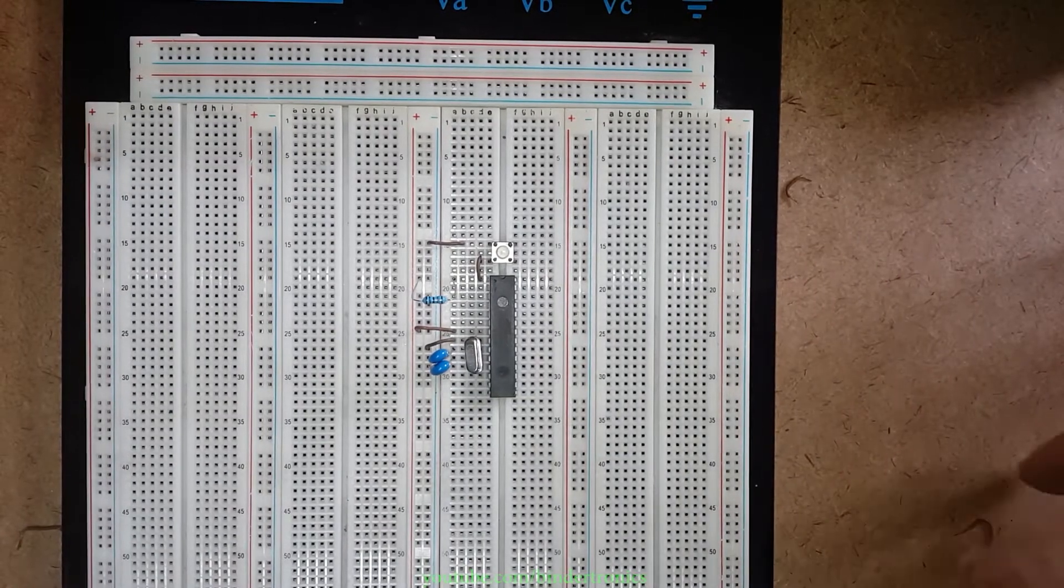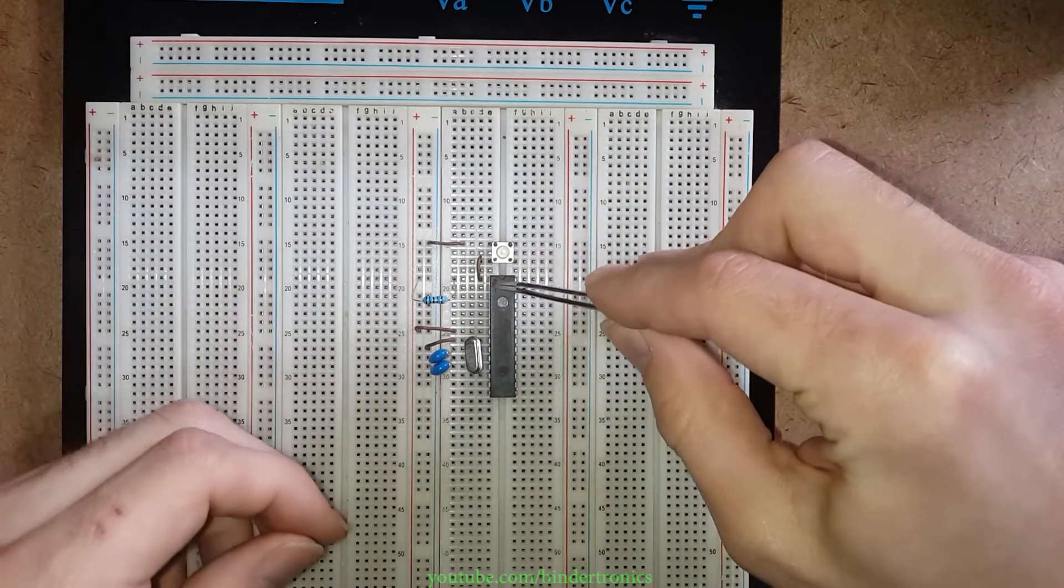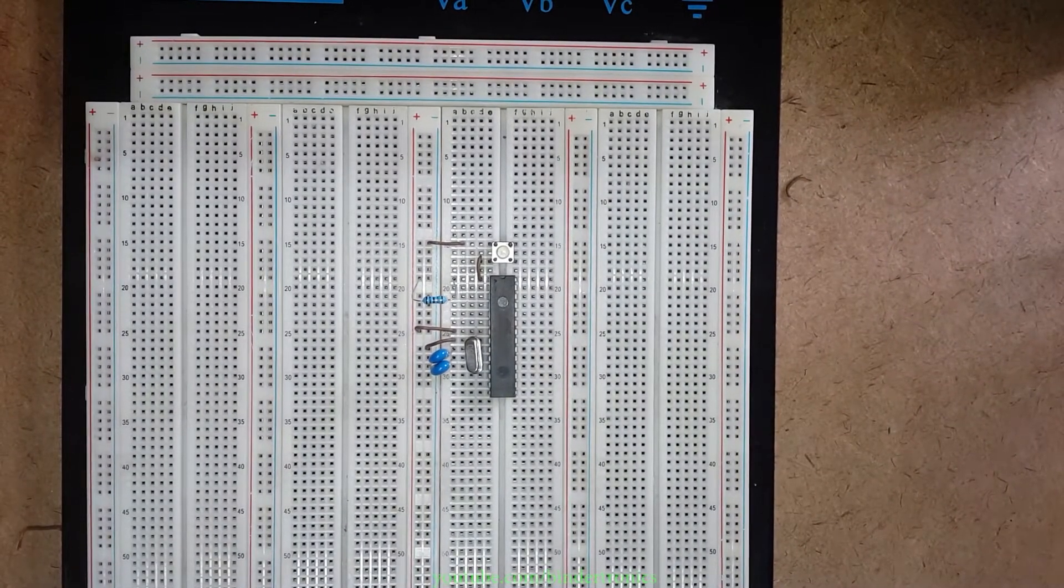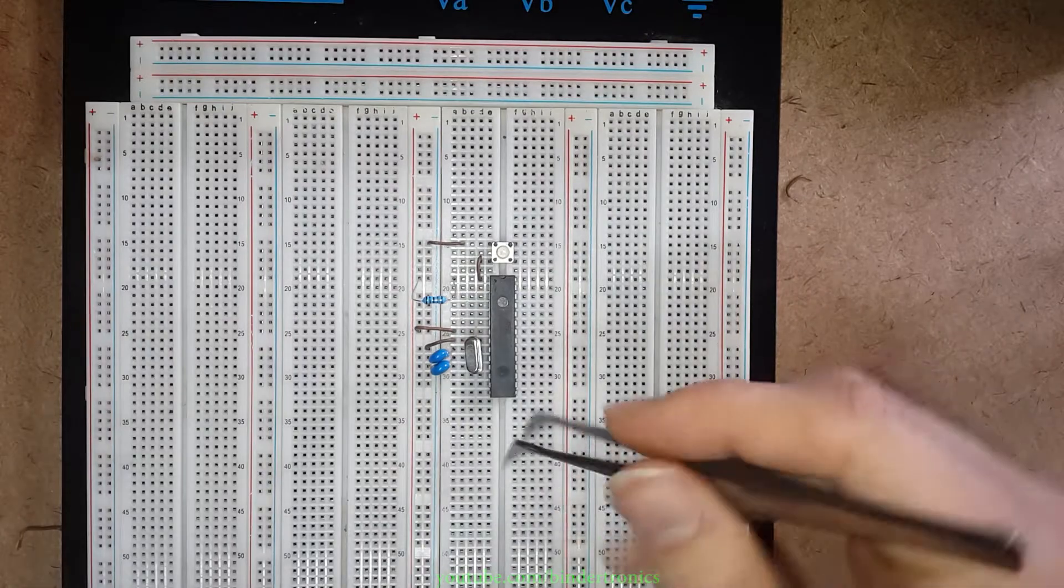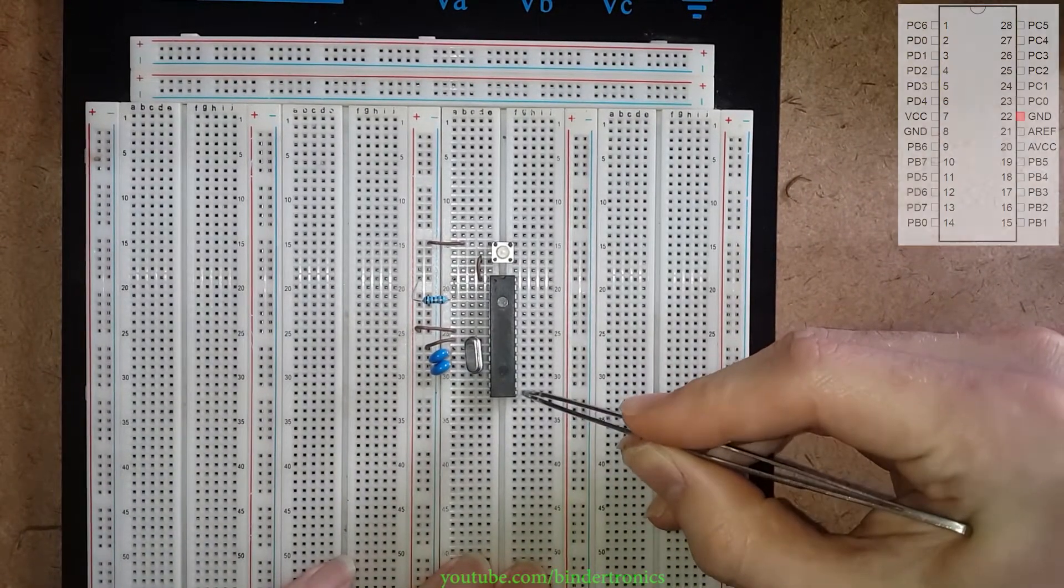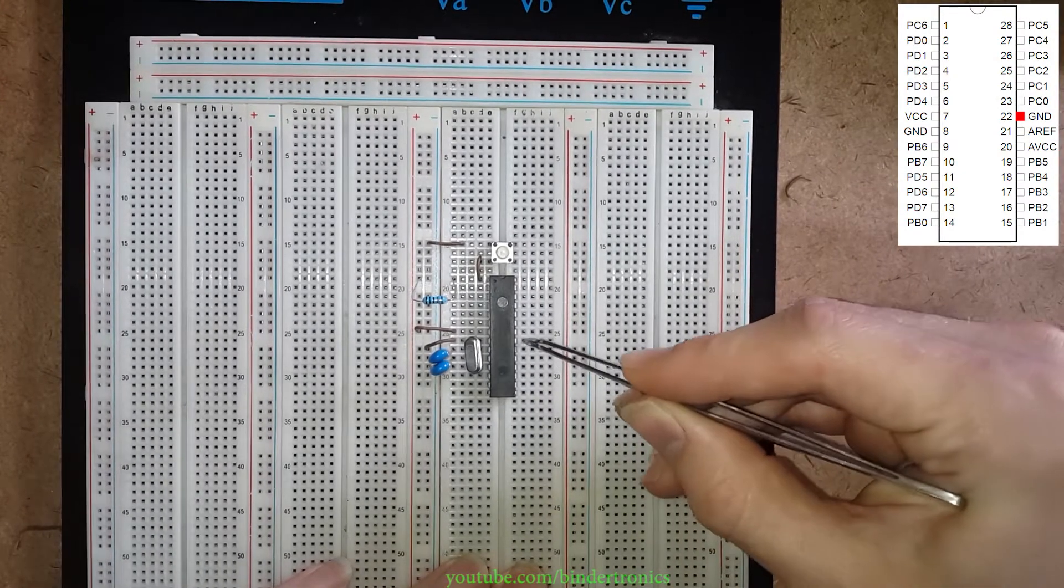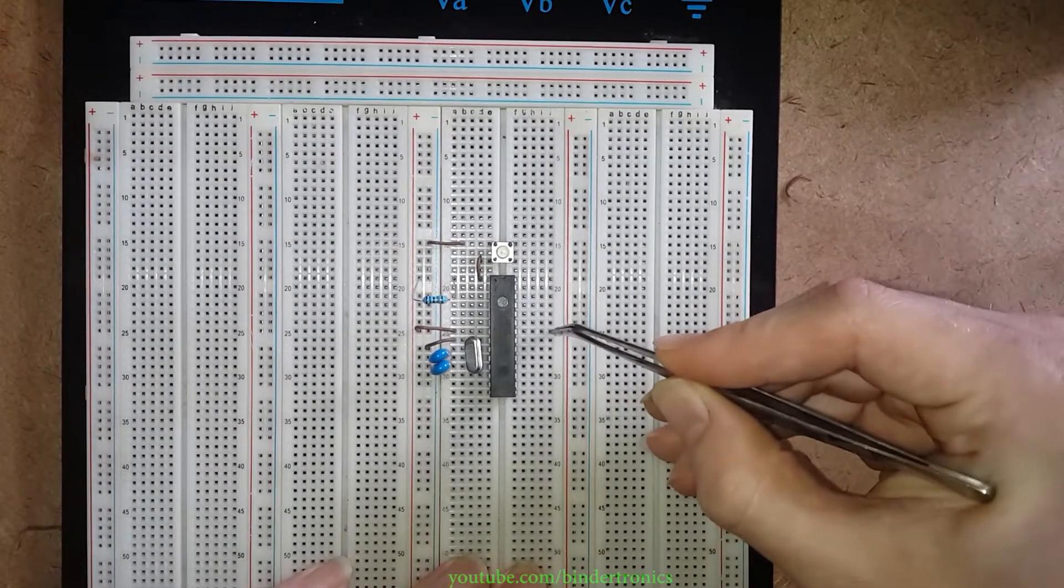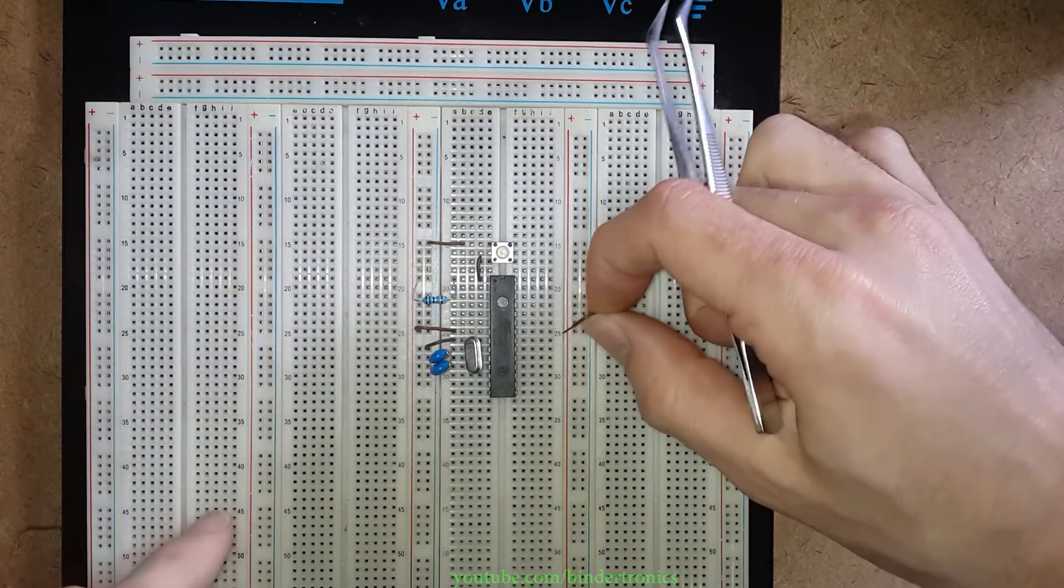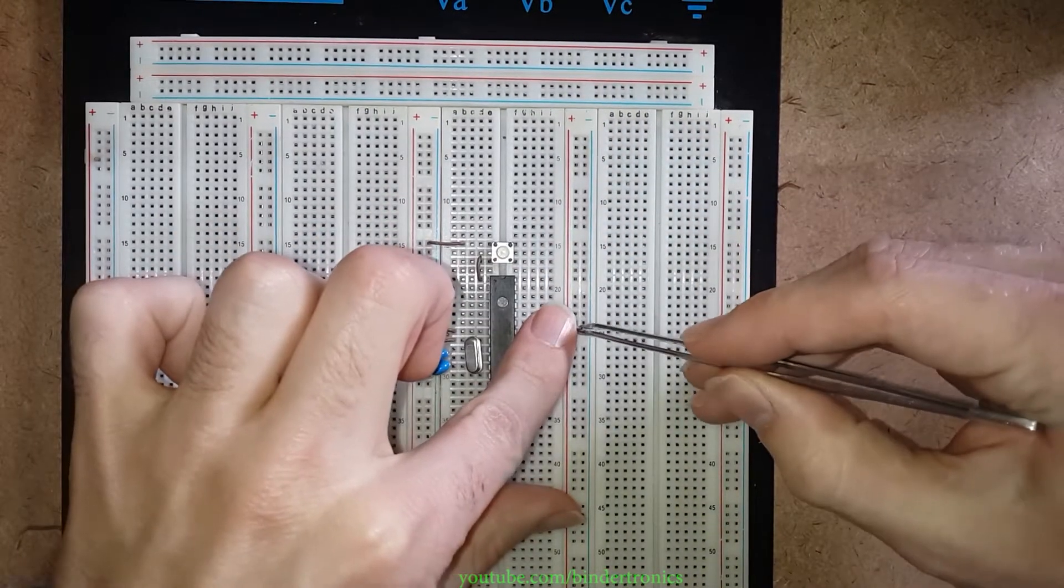And then we have a second ground which is on pin 22. So we go all the way down here to pin, let me just double check, pin 14. And then we skip over. Then this one will be 15. Then we need 22. So 16, 17, 18, 19, 20, 21, 22. So also on 25 of the breadboard. That will be ground so we are placing it into the blue rail.